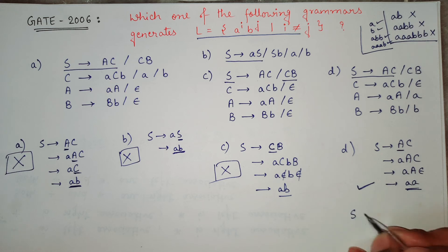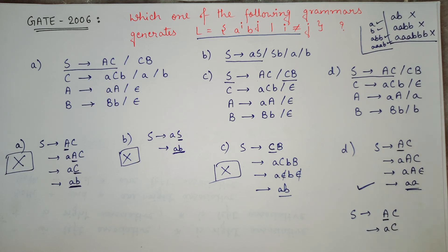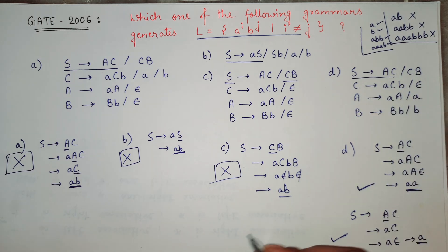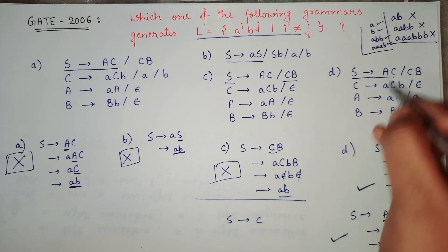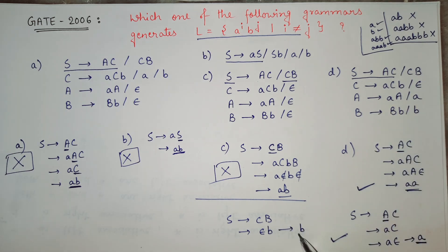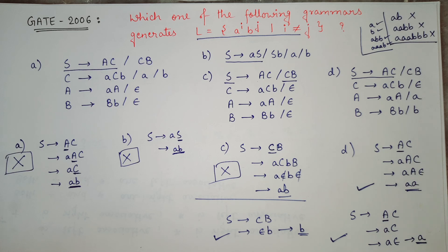Let's check a couple more possibilities for D. Taking S → AC, replacing A with 'a' and C with null gives one 'a' and zero b's — again different numbers. Taking S → CB, replacing C with null and B with small 'b' gives zero a's and one 'b' — again different. Across all possibilities, option D consistently generates different numbers of a's and b's.